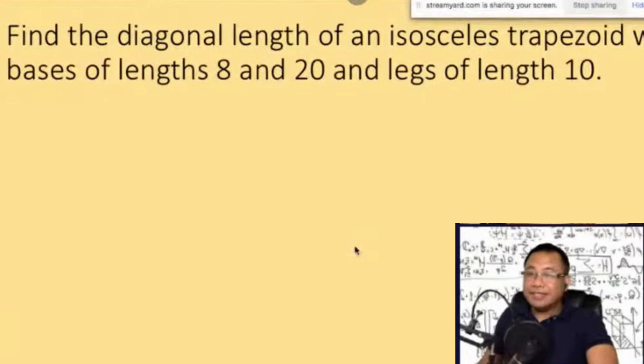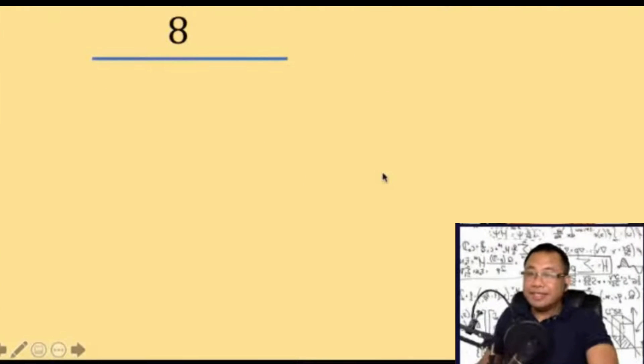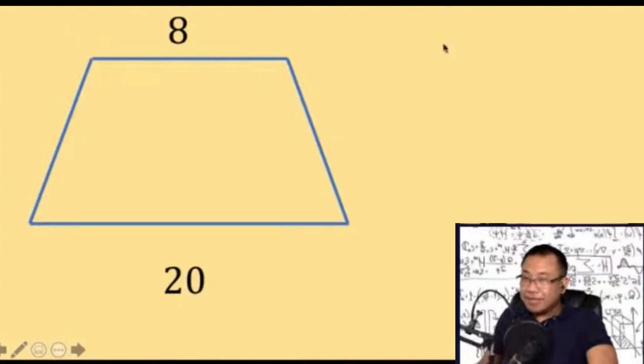Okay, here's the explanation. We are given an isosceles trapezoid, so let's draw the trapezoid. The base is 8, the lower base is 20, and the two legs measure 10.